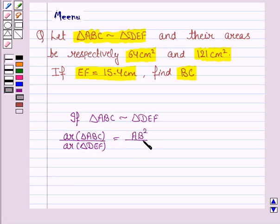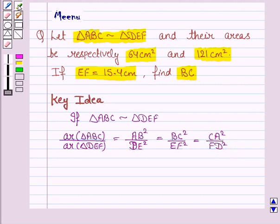AB² upon DE² is equal to BC² upon EF² is equal to CA² upon FD². So this would be the key idea to solve this problem.